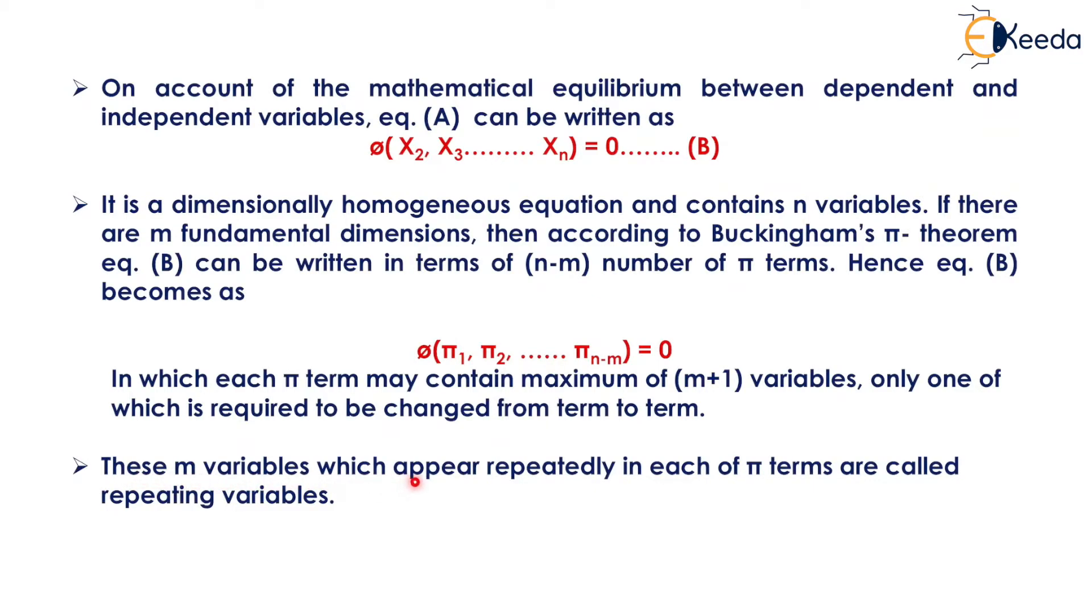These m variables which appear repeatedly in each of the π terms are called repeating variables.